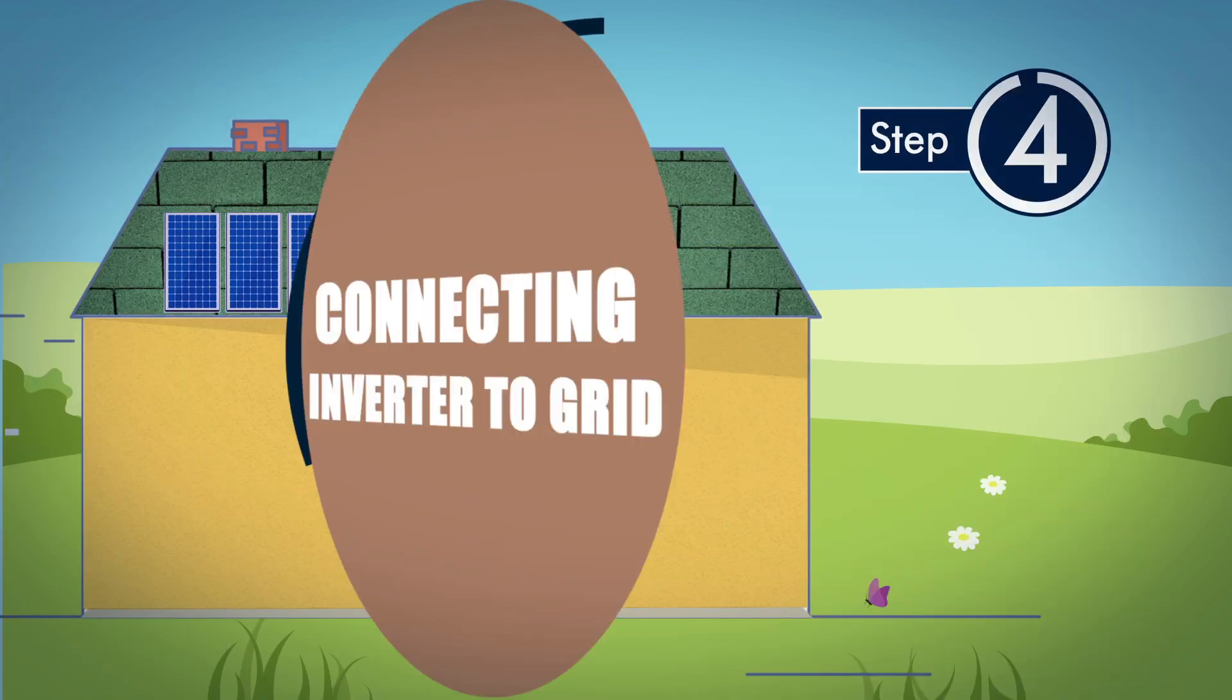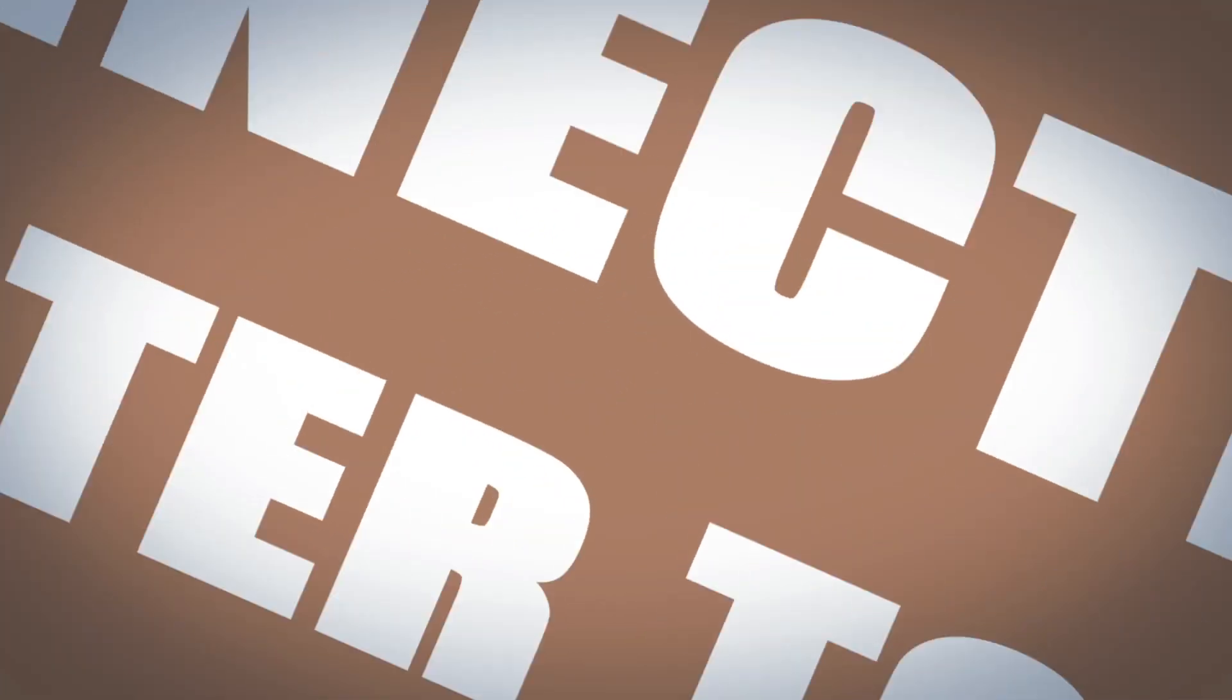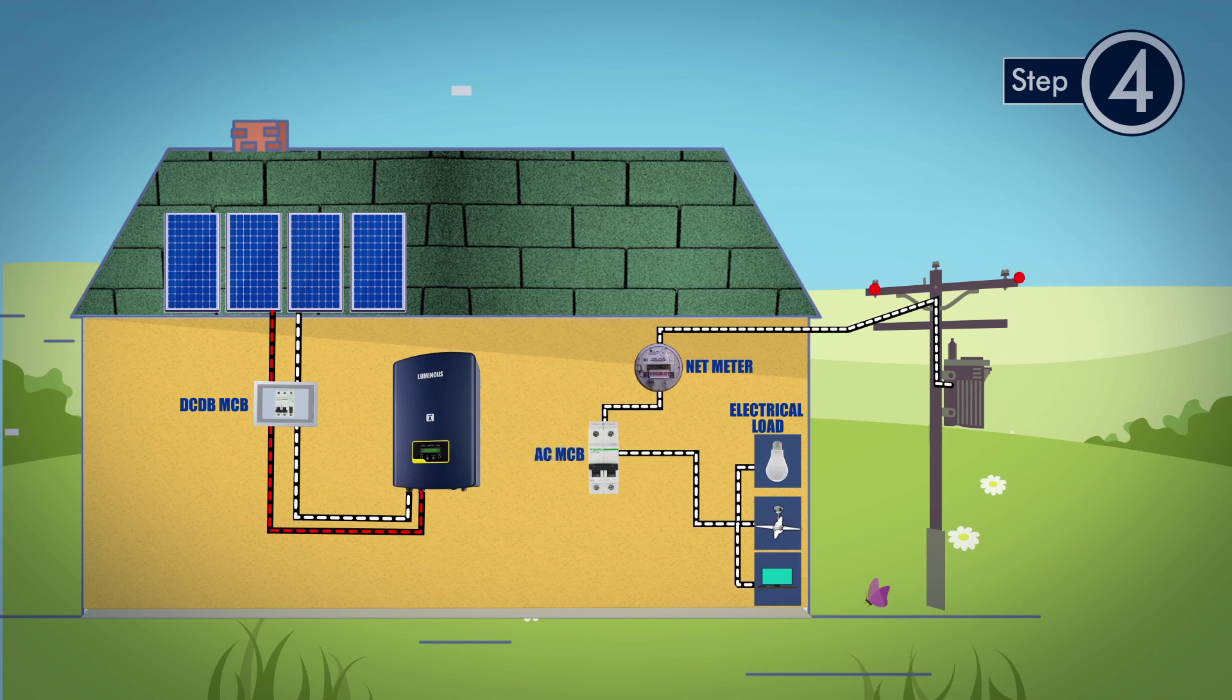Step 4. Connecting inverter to grid. Do the mains connection for which first switch off the grid's main AC supply.